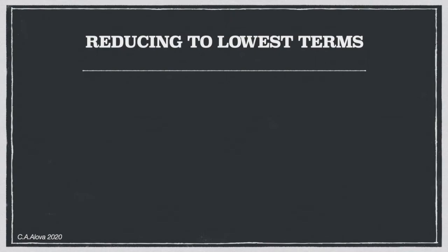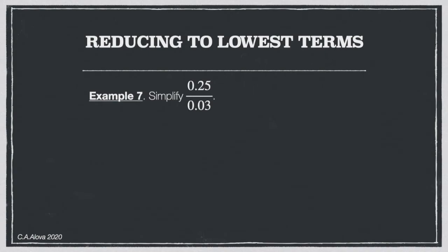We can also apply Proportionately in reducing fractions to lowest terms. For example, simplify 0.25 divided by 0.05. By multiplying both numerator and denominator by 100 — moving the decimal point two places to the right — we get 25 over 5, which equals 5. That's the concept: applying the same operation to all numbers preserves the value.